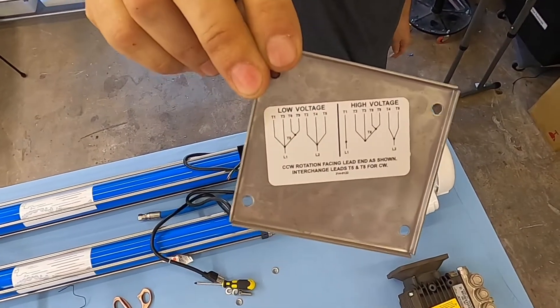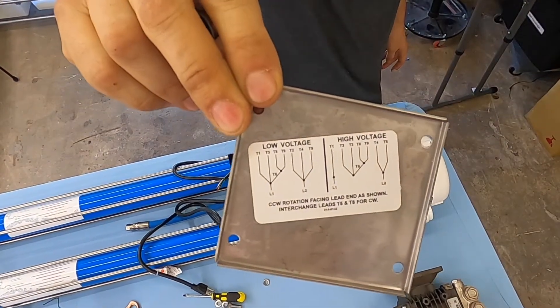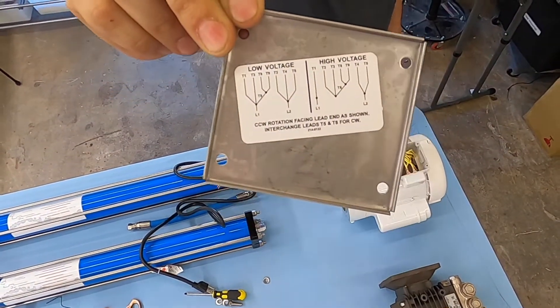This one says low voltage and high voltage. Low voltage means 110, high voltage means 220, 230.